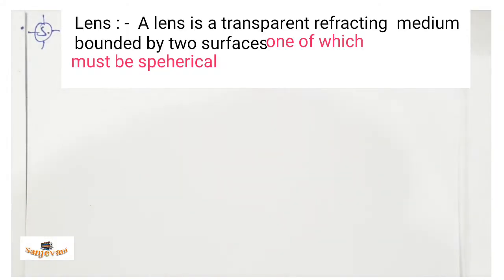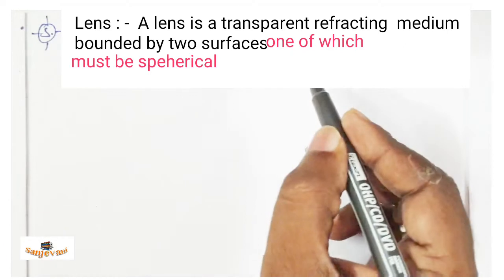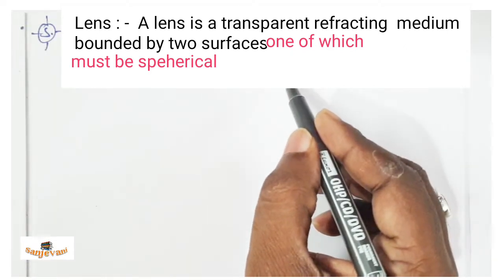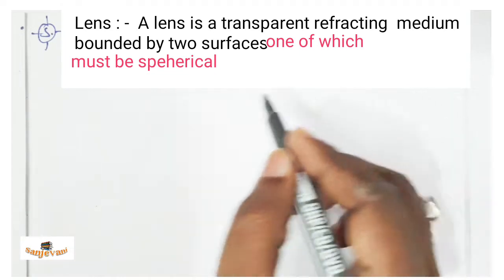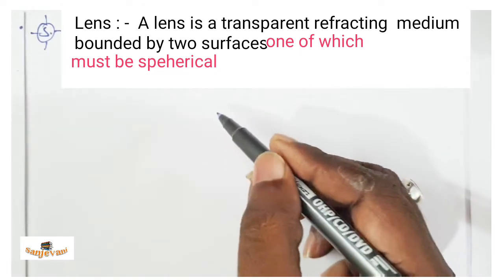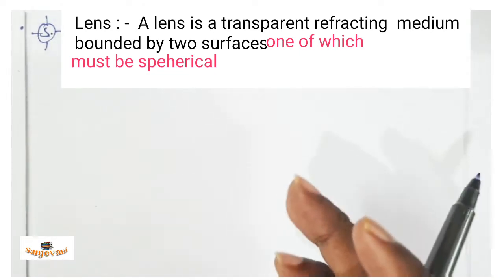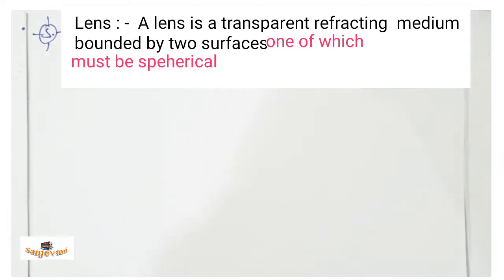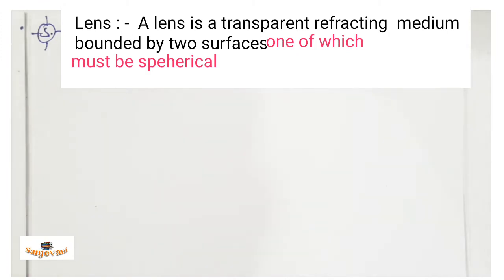Today we are discussing regarding lens. A lens is a transparent refracting medium bounded by two surfaces, one of which must be spherical. That means it needs to have two surfaces, and one of those must be spherical.